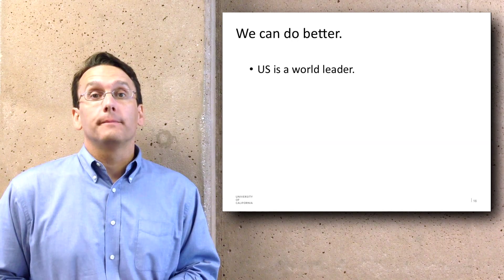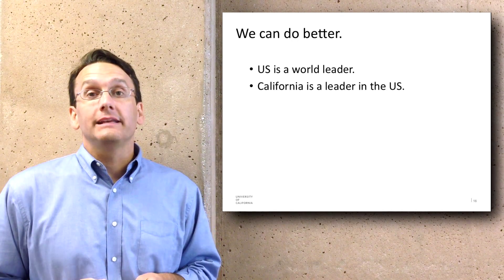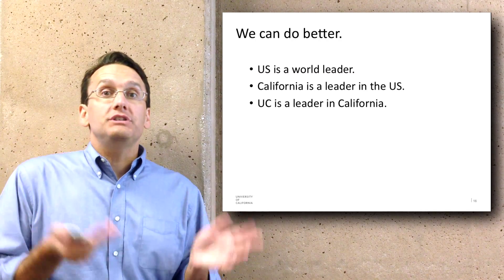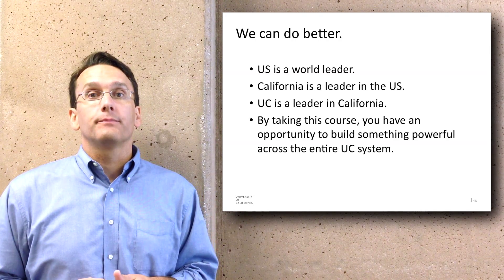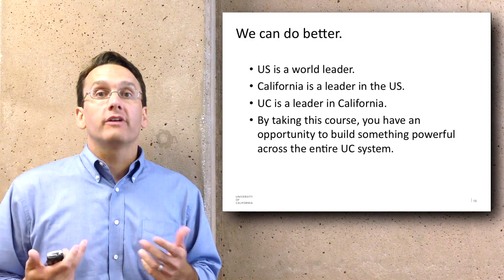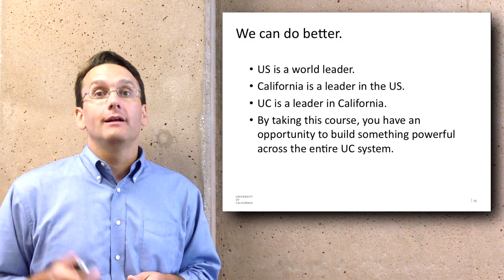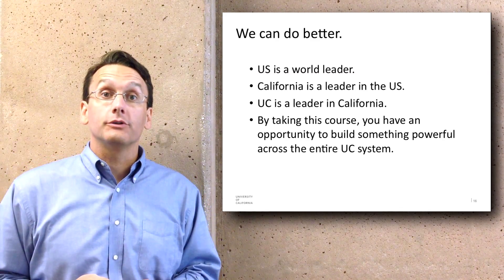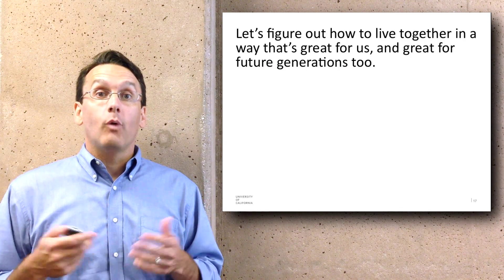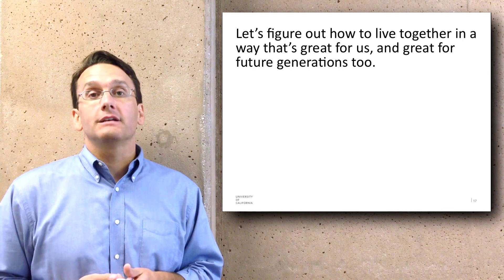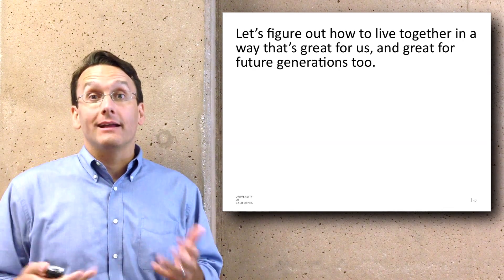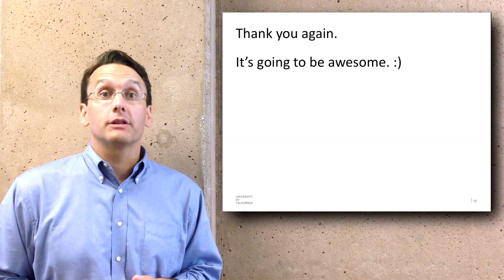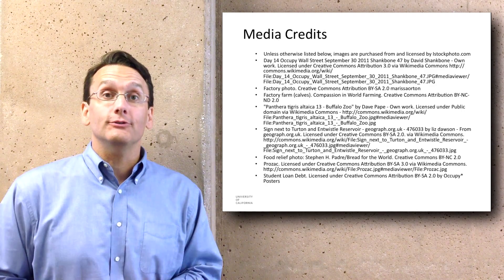We think we can do better. The U.S. is a leader in the world; California is a leader in the U.S.; the UC system is a leader in California. By taking this course, you have an opportunity to build something powerful that can span across the entire UC system and ripple out into the rest of the world. What we'd like to do in this course is figure out how to live together in a way that's great for us and also great for future generations. Thank you again for being part of this course — we think it's going to be awesome and we hope you do too.